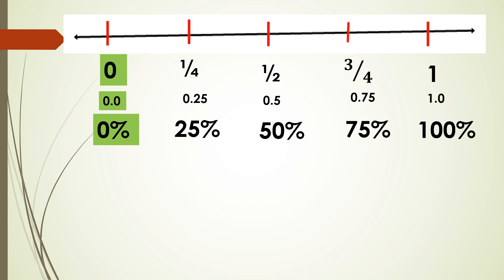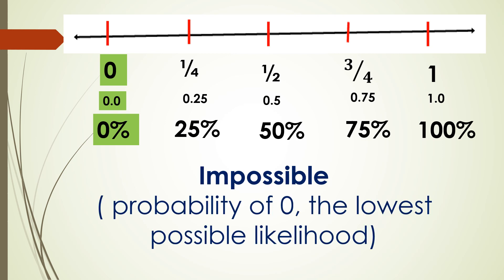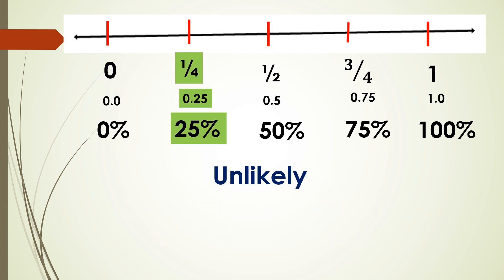We are using different terms to describe the probability of an event. The first term is impossible. This is the probability of 0, or lowest possible likelihood. It means that a certain event will never happen.